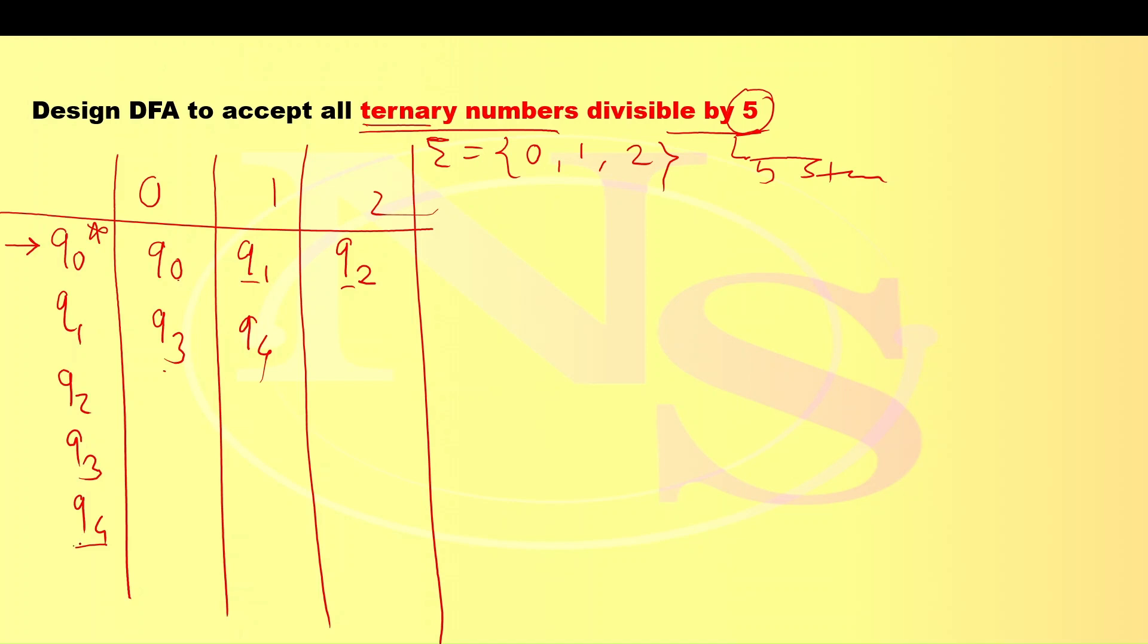If all state names are over, you can again start from Q0, Q1, Q2, Q3, Q4. Likewise, you can complete this table. Now, we can draw the diagram from this table.